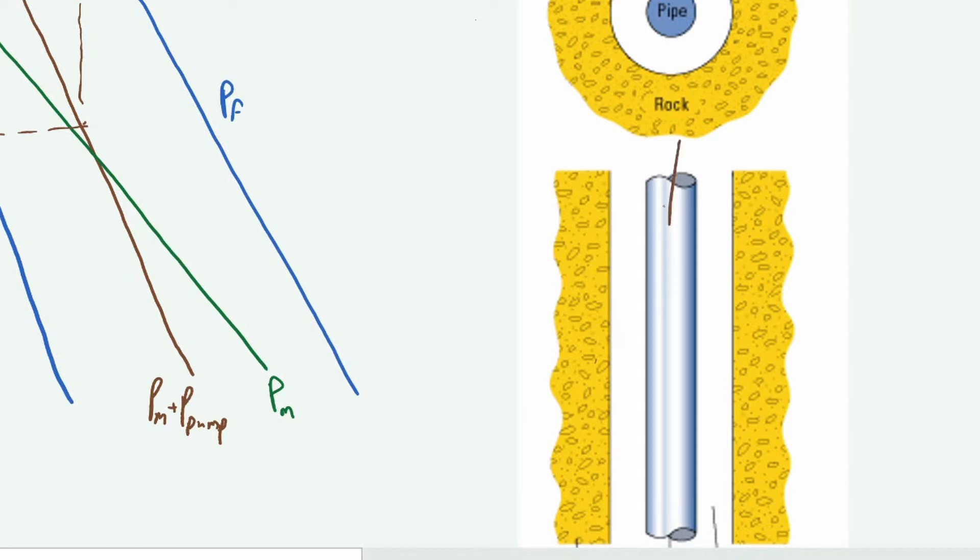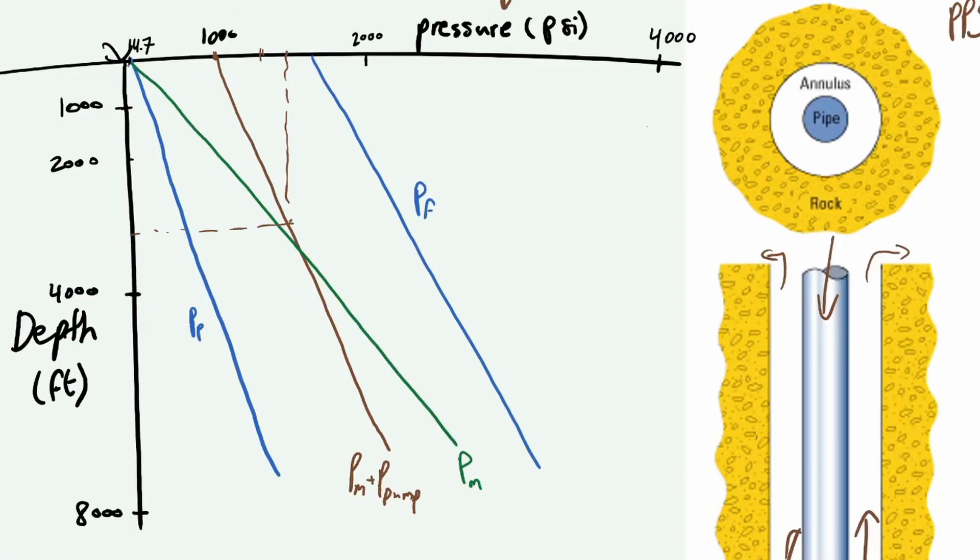We discussed in the previous video how mud is pumped from here, then it goes through the drill bit, goes up and comes up. From the previous video we know this is the formation fracture pressure, so how much pressure you can exert on the formation until you crack it. If you exceed this graph at any point, it would lead to a crack in the formation.